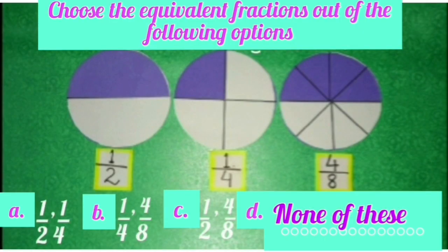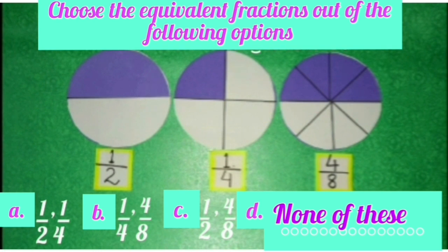Now we will do a question related to this. Choose the equivalent fractions out of the following options. Students, you can see in the second figure the colored part is not the same as the other two figures. So the fractions of the colored part of the first and third figures are equivalent. So option C is correct.